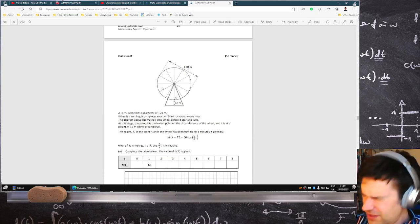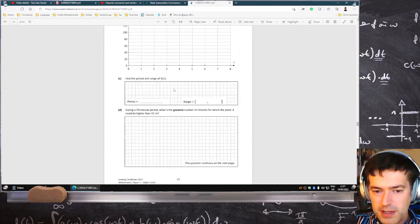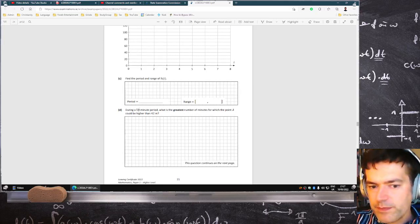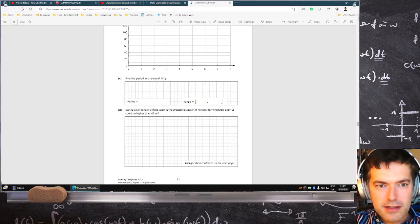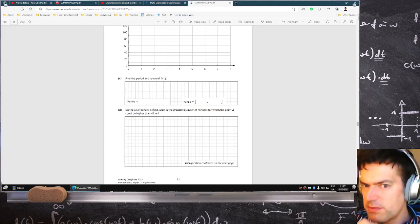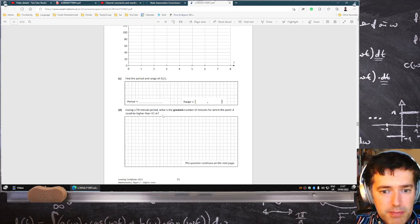This question, I hated it. Just absolutely hated this question. Really had trouble with it, and I was really confused by this part here. And somebody pointed out they thought part D was saying that the Ferris wheel slowed down because they said during a 50-minute period, and they thought the period changed from 6 minutes to 50. And I was thinking, yeah, actually, that is poor English. Perhaps it would have been better to say during a 50-minute duration.